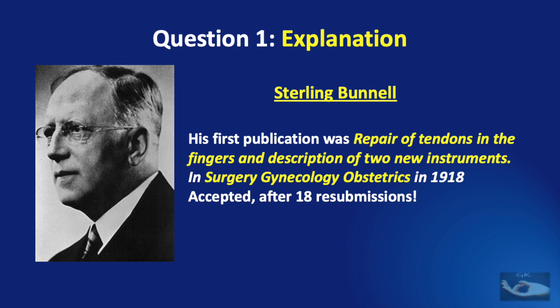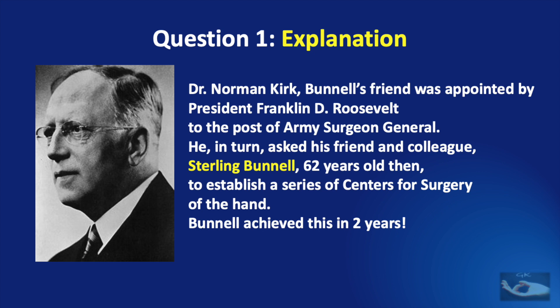This article was accepted after 18 re-submissions. During World War II, Dr. Norman Kirk, Bunnell's friend, was appointed by President Franklin D. Roosevelt to the post of Army Surgeon General of the United States. He, in turn, asked his friend and colleague Stirling Bunnell — 62 years old at that time — to establish a series of centers for surgery of the hand, and Bunnell achieved this in two years.